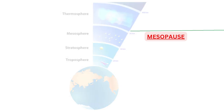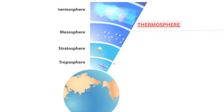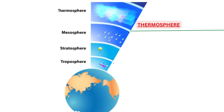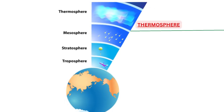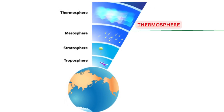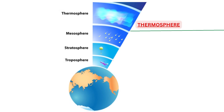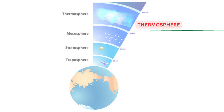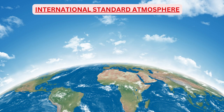The last layer is thermosphere. Thermosphere extends from mesopause to the end of the atmosphere, where temperature increases with height until the atmosphere ends at approximately 800 km.